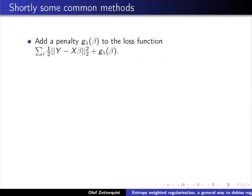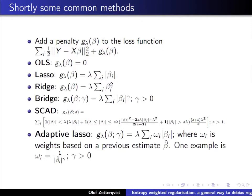A quick recap of common methods: ordinary least squares has no regularization term. Lasso uses the L1 penalty with a strength hyperparameter. Ridge uses L2 squared. The Bridge is a generalized version between the two. Lasso and Ridge come with relatively high bias in their estimations.